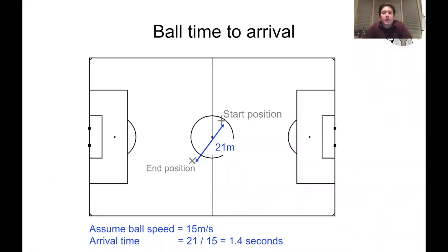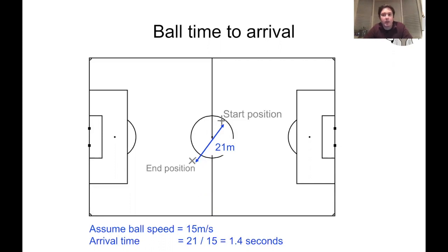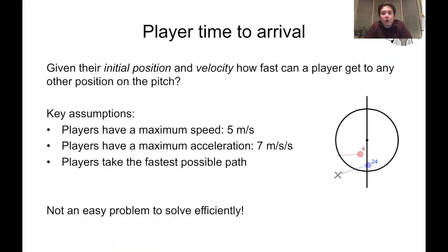Let's first look at the time it takes the ball to arrive at a given location. In our example, player 20 was in possession at this start location and wants to pass to an end position about 21 meters away. In this model we simply assume that the ball travels at a constant speed of 15 meters per second, so it takes 21 divided by 15, which is 1.4 seconds, to arrive at the end position.